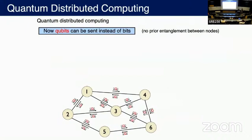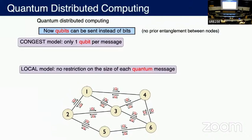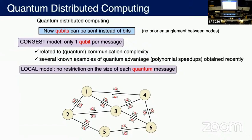Now the quantum version. In a few words, it's exactly the same, but now we can send quantum messages. We assume we don't have any prior entanglement. Each edge is now a quantum channel and you can send quantum messages. Again, there are two submodels: the Congest model, where you can send only one qubit per message, and the local model, where there is no restriction on the size of the quantum message. The Congest model is very related to communication complexity, and there are several known examples of quantum advantage — typically polynomial speedups — obtained recently in the quantum Congest model. For the local model, on the other hand, there are very few results, and this talk focuses on the local model.